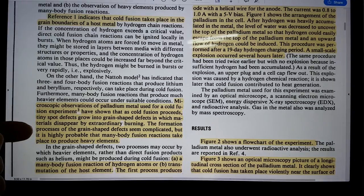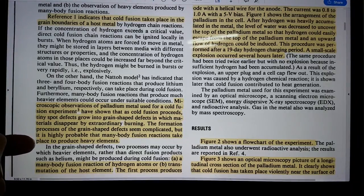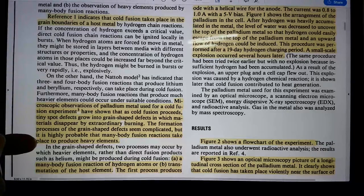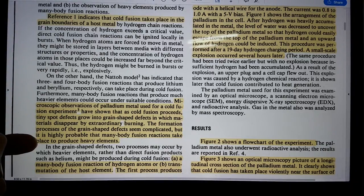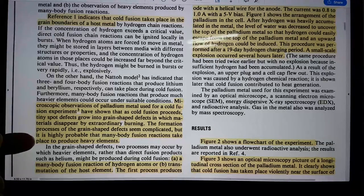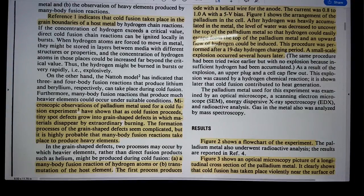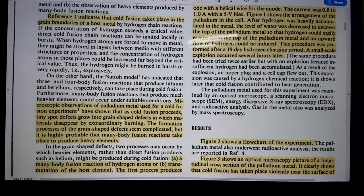The formation processes of a grain-shaped defect seem complicated, but it is highly probable that many body fusion reactions take place to produce heavy elements. I would agree with that also. This is not just deuterium and deuterium. This is many body. It isn't just like two deuteriums coming together. This is many, many deuteriums coming together, even if you're just talking about a DD system.